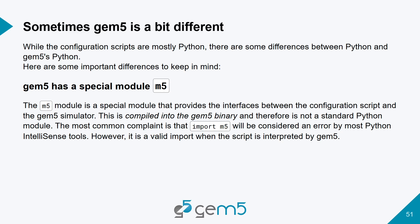gem5 is a bit different from regular Python in some ways I want to go over, because they're kind of gotchas. Even Python experts can easily run into errors here because these things are different in gem5. gem5 has a special module, a special import: m5. One thing you'll notice in many environments is your IntelliSense doesn't really understand where this is, because it's looking for it inside the Python standard library.